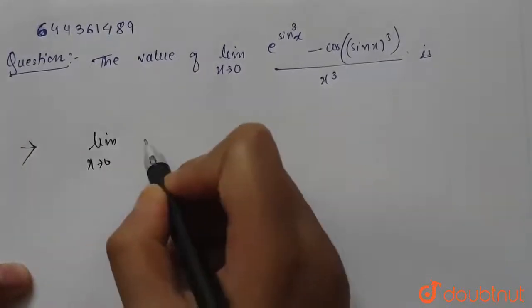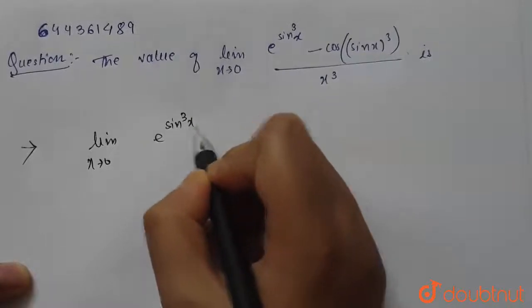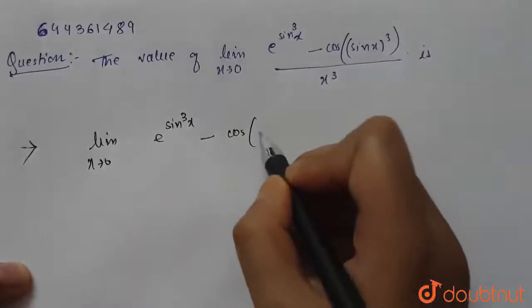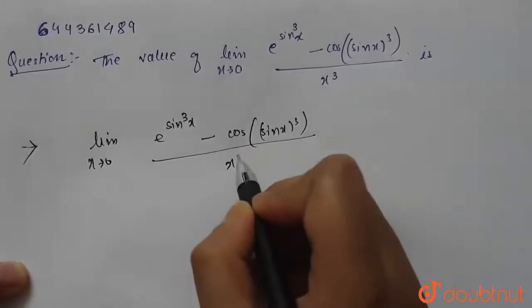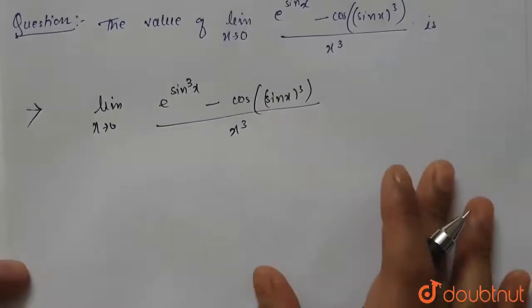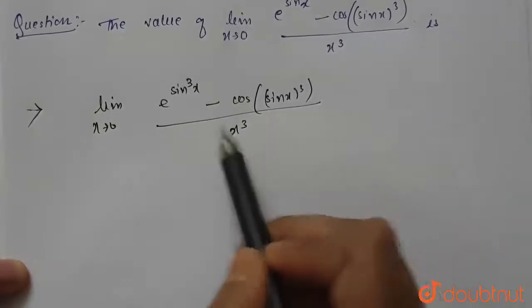Now if we put the value of x as zero, we will get zero in the numerator and zero in the denominator, because e^0 is 1 and cos 0